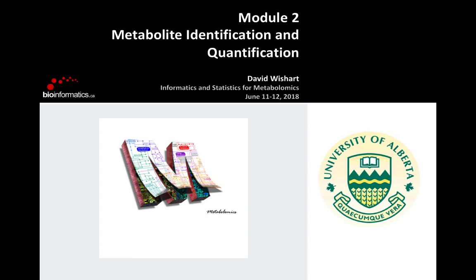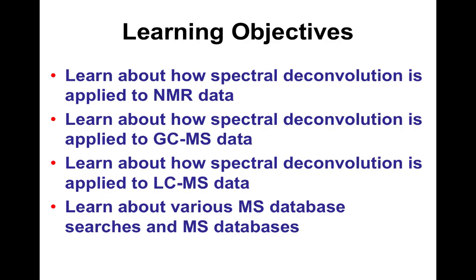We're going to move to metabolite identification and quantification, looking at three general approaches: NMR first, then GCMS, then LCMS. This is a preamble to the lab we'll be doing after lunch, to prime you so you'll have an idea of what we're doing. We'll also talk about searching through different databases for compound identification, especially with mass spec.